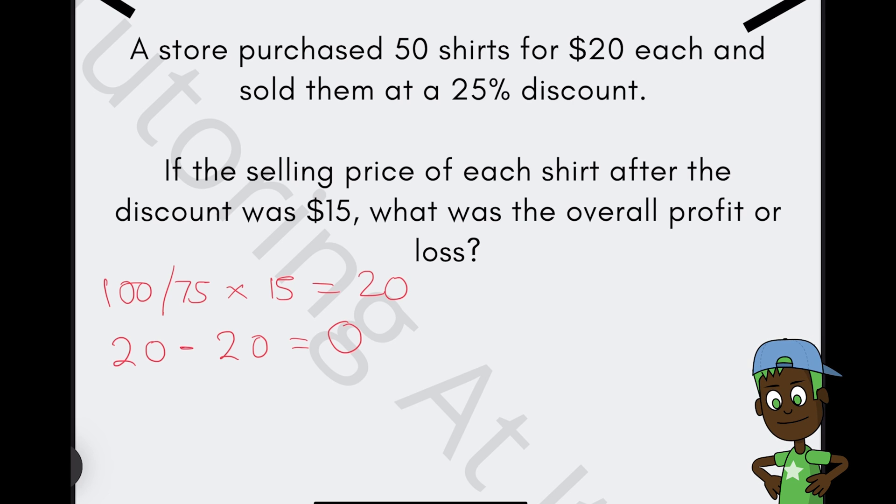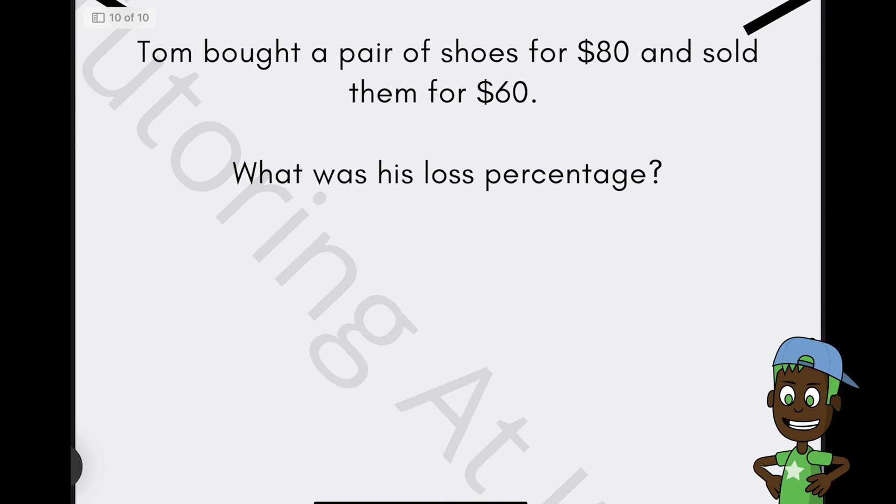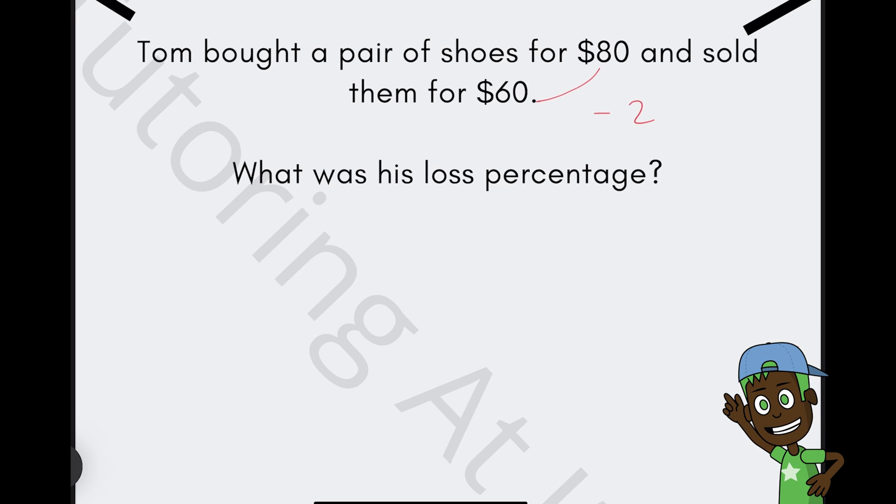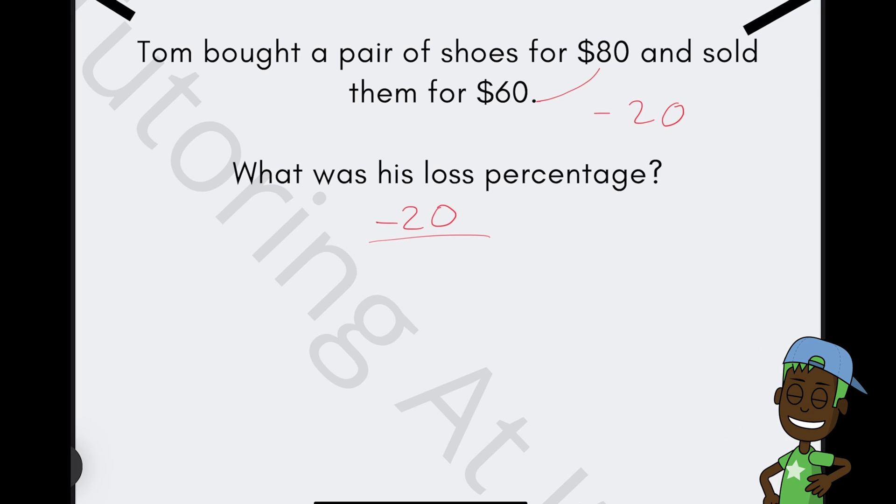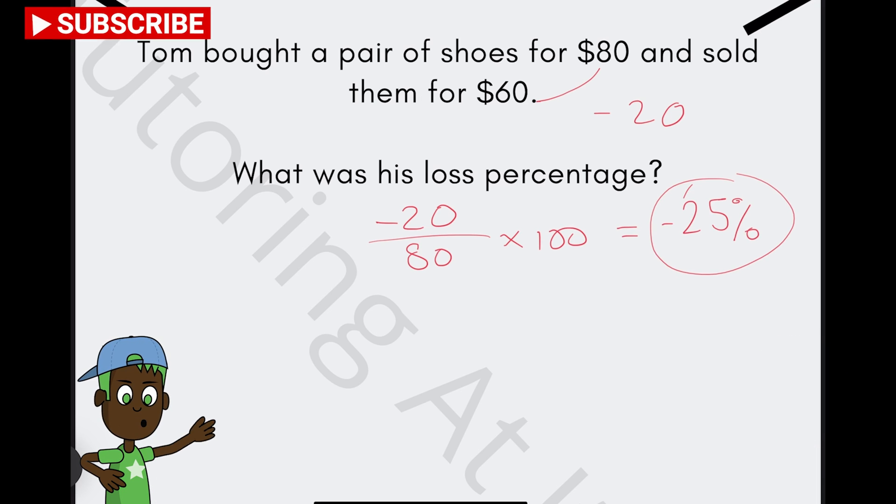And the final question. Tom bought a pair of shoes for $80 and sold them for $60. So what was his loss percentage? Well, we instantly know that it's a minus $20. So all we need to do is our value over the total times by 100, and that's a minus 25%. And so Tom's loss percentage was approximately 25%.